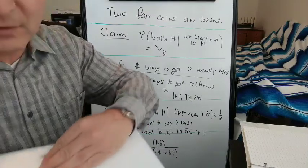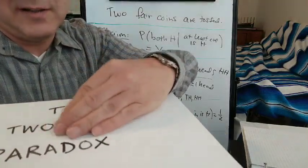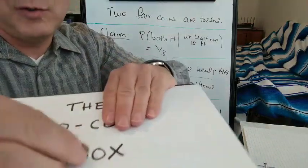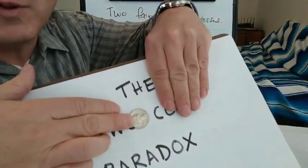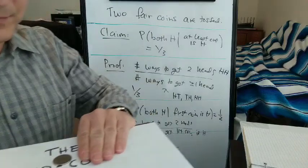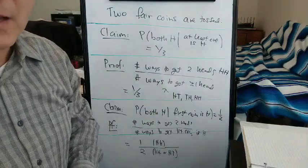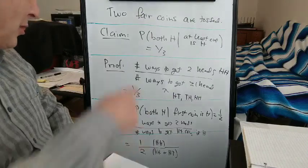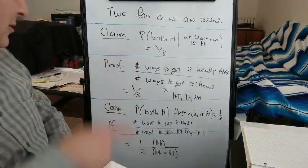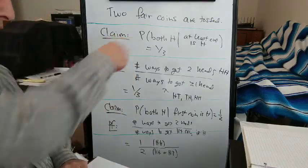Alright, so I've got two coins here. And if I show you that one of them is head, what's the probability that the other one is head? You might think one half, but actually it's one third because we're doing the first version of the problem here.